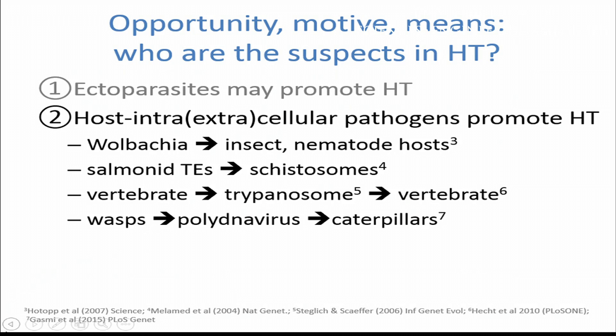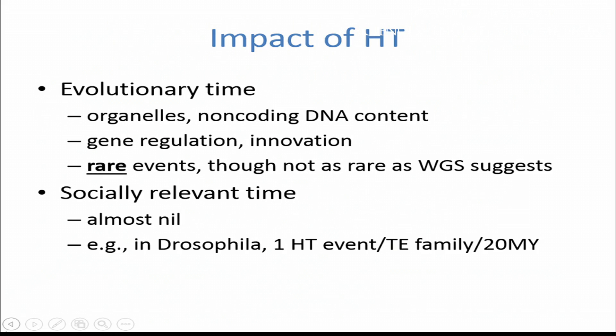Finally, there's a bizarre case of a parasitic wasp that is parasitic on caterpillars with the help of a polydnavirus. This polydnavirus carries wasp genes, and GASME et al. in Science published the fact that some caterpillar species have these wasp genes integrated into their germline where they've been recycled and now function to protect the caterpillar against an entirely different virus, a baculovirus. These are all interesting evolutionary vignettes, but we have to keep in mind that horizontal transfer in multicellular animals as opposed to bacteria is really very rare.